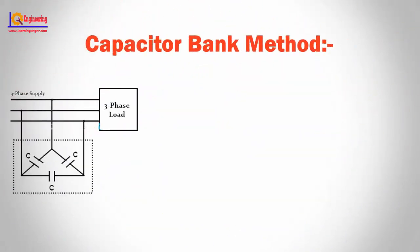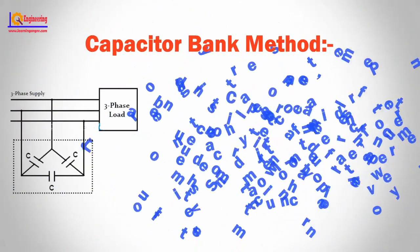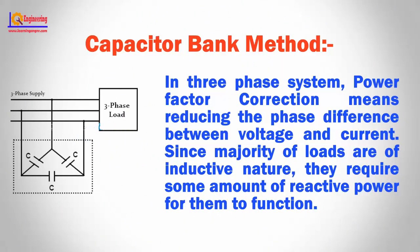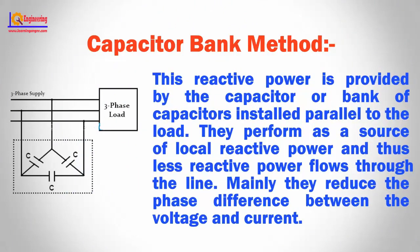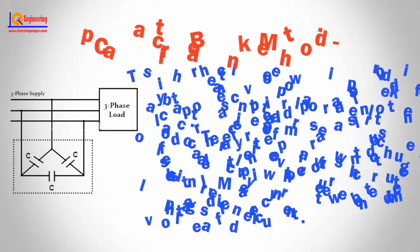Power factor correction by using the capacitor bank method. In a three-phase system, power factor correction means reducing the phase difference between voltage and current. Since the majority of loads are of inductive nature, they require some amount of reactive power to function. This reactive power is provided by a capacitor or bank of capacitors installed in parallel to the load. They perform as a source of local reactive power, and thus less reactive power flows through the line, mainly reducing the phase difference between the voltage and current.